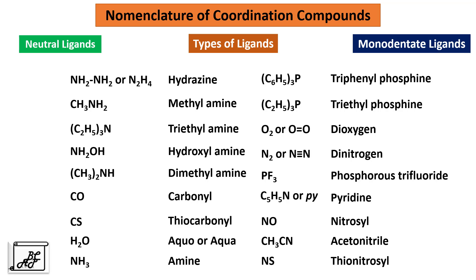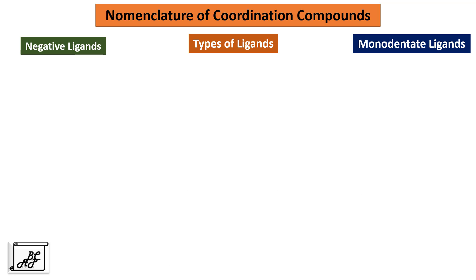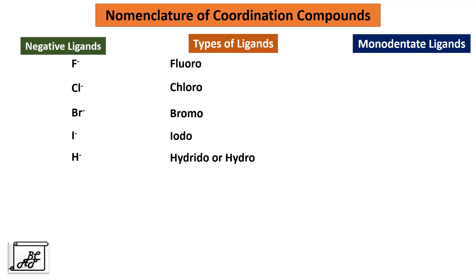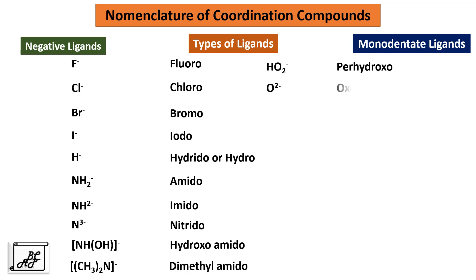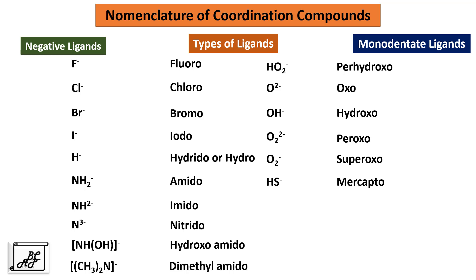Now let us see some of the negative ligands. For example: fluoro, chloro, bromo, iodo, hydrido (or hydro), amido, imido, nitrido, hydroxoamido, dimethylamido, perhydroxo, oxo, hydroxo, peroxo, superoxo, mercapto, sulfido (or thio), sulfito, and sulfato. This system is used for the monodentate ligands.